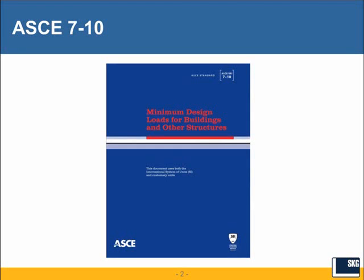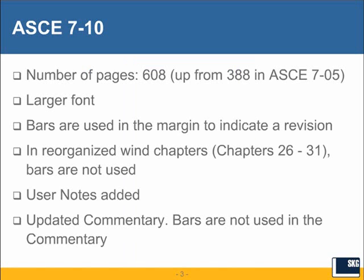Here's the cover of ASCE 7-10, and it came out in May of last year. For those of you that have a copy, the first thing you'll notice is that it's most definitely thicker than ASCE 7-05. Taking a non-technical view of what's different between ASCE 7-05 and 7-10, you can see that the number of pages has gone up from 388 to 608. Part of that can be explained by new provisions, part by a longer commentary, and part by a larger font — as you flip through the pages, you'll see the larger font.